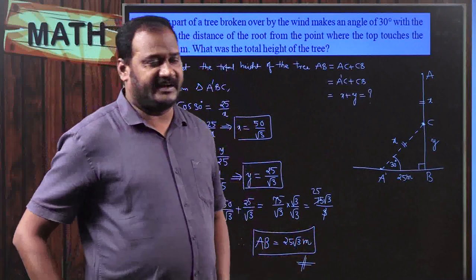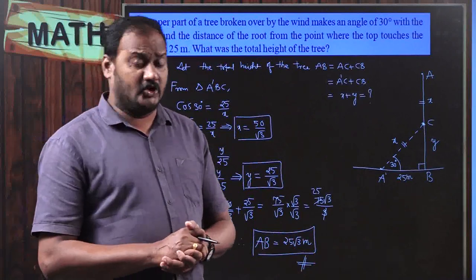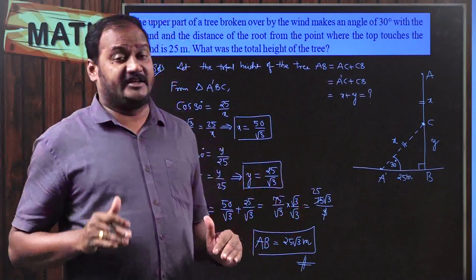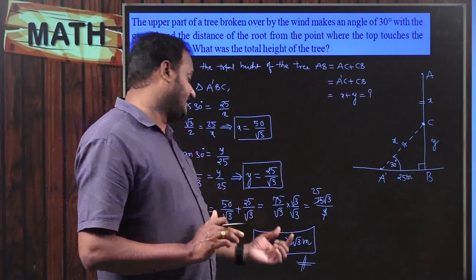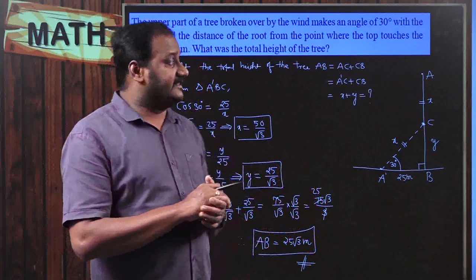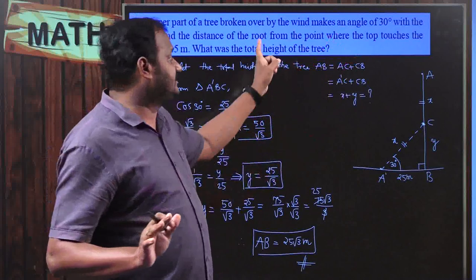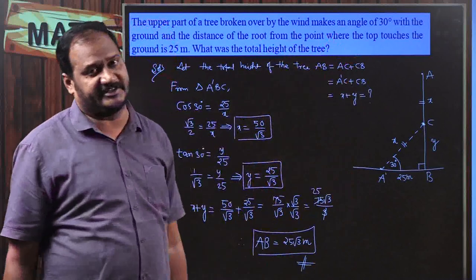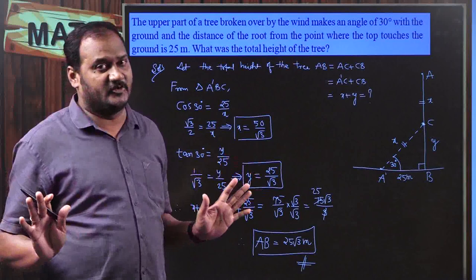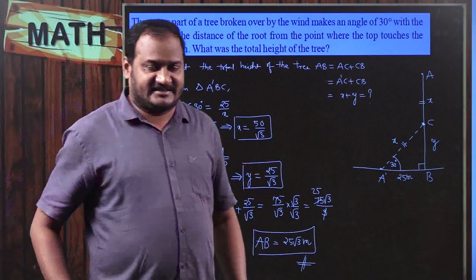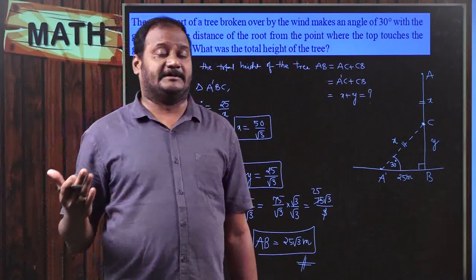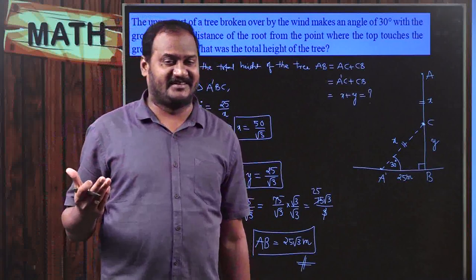You might wonder whether to substitute √3 = 1.732. You can substitute if the value of √3 is mentioned in the problem; if not, leaving the answer as 25√3 meters is perfectly fine — no marks will be deducted. This is a very interesting and useful concept, with great importance in Grade 11, Grade 12, and intermediate studies as well. Thank you.